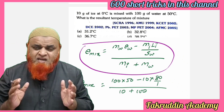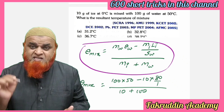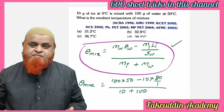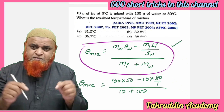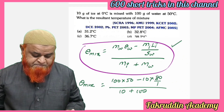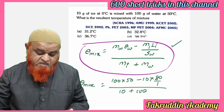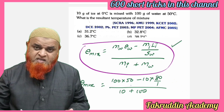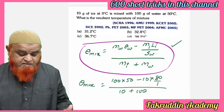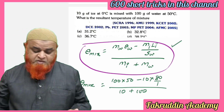There is a lengthy process for that, but I am giving you a small shortcut formula which is shown here. Just substitute in this formula whatever data is given. So theta of the mixture equals: mass of water is 100, and 50 is the temperature at which the water is present.